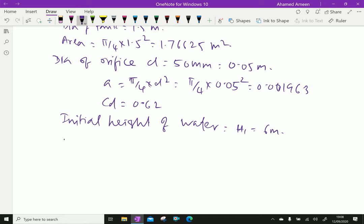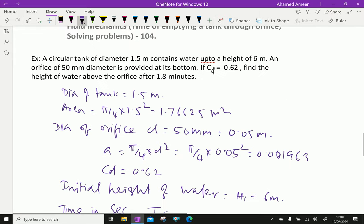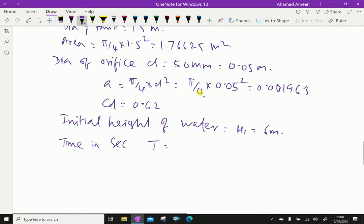Time in seconds: T equals 1.8 minutes, which is 1.8 times 60 equals 108 seconds.